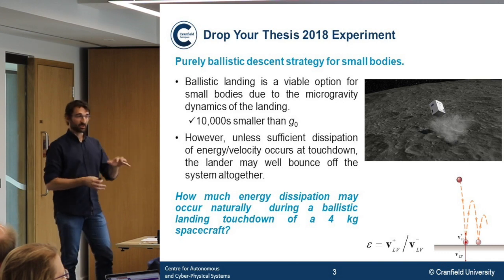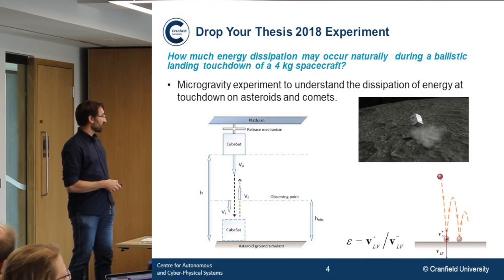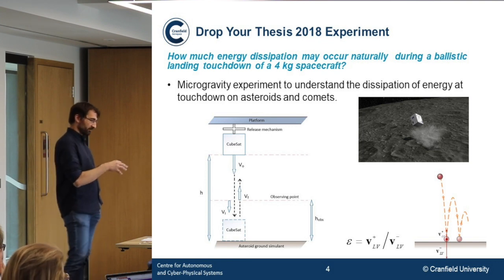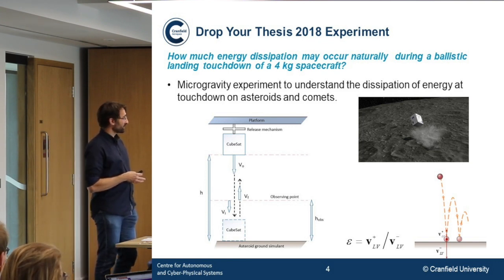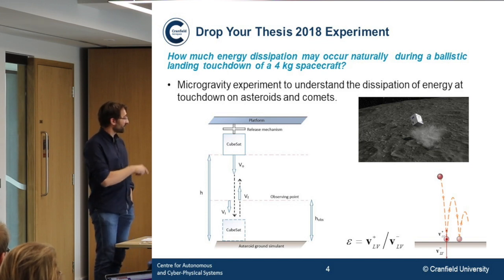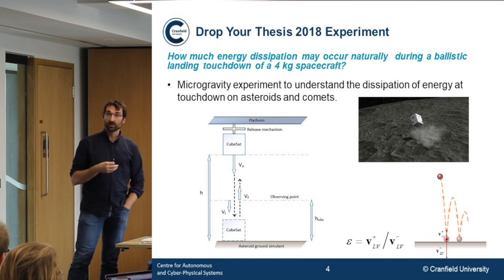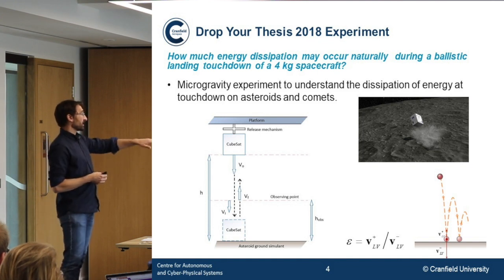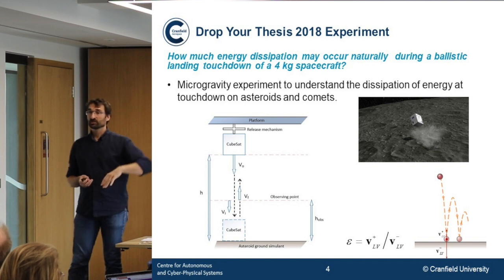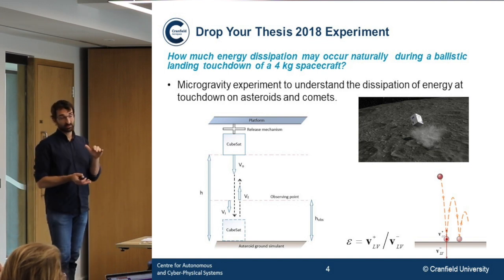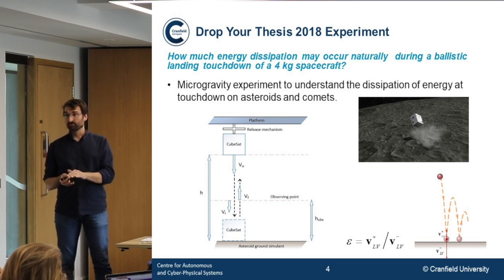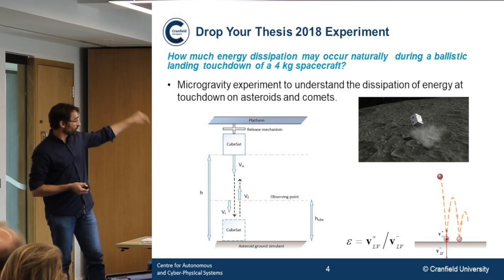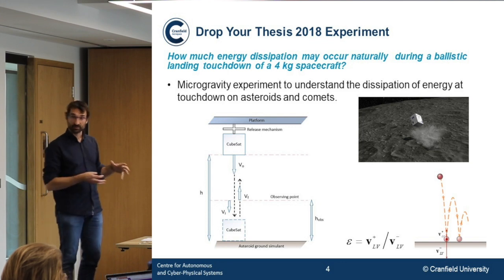We were thinking of a 3U CubeSat — a small box of 10 by 10 by 30 centimeters weighing about four kilograms — as a scientific payload to land on an asteroid. In November 2017, students organized themselves to put a proposal together. The experiment concept was very simple: have asteroid ground simulants or some sort of regolith, push the CubeSat to the desired touchdown velocity, and record velocity just before and just after touchdown, all in microgravity conditions.